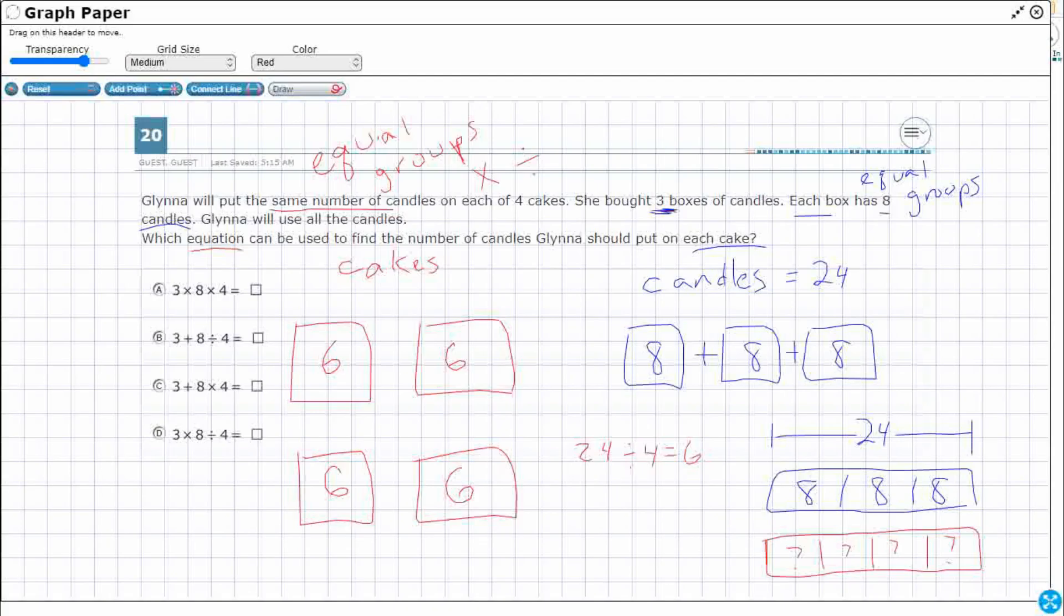So look at this. You see this right here? That's eight plus eight plus eight, but that's also three times eight. So three times eight, it could be a or d. And then what did I do with that four cakes? Well, I divided it by four to get to my six instead of multiplying. So that's wrong. So it's going to be d.